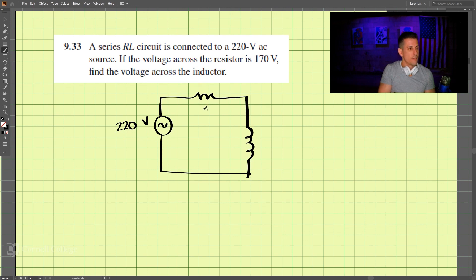The resistor is here and the inductor is here, and we know the voltage across the resistor is 170 volts.